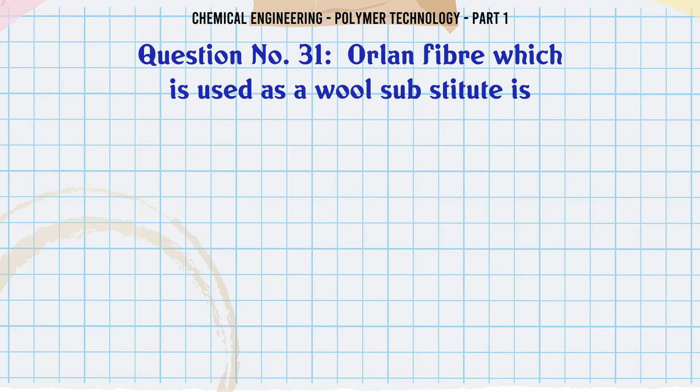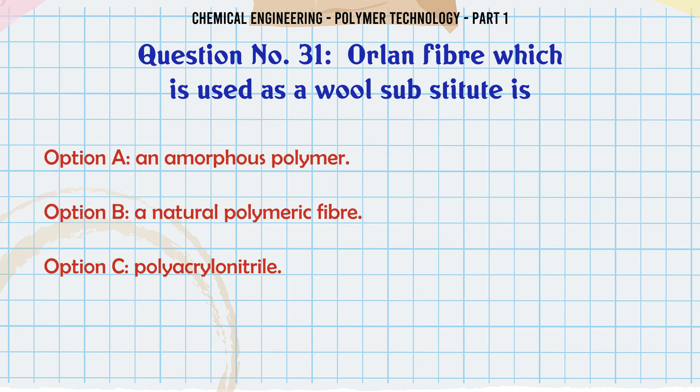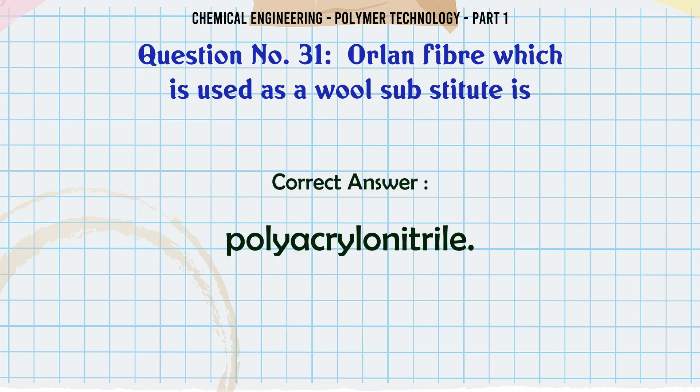Orlon fiber, which is used as a wool substitute, is: A. An amorphous polymer, B. A natural polymeric fiber, C. Polyacrylonitrile, D. Polymethyl methacrylate (PMMA). The correct answer is Polyacrylonitrile.